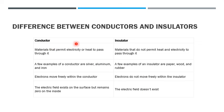Now we will discuss the difference between conductors and insulators. Conductors: materials that permit electricity or heat to pass through it. Insulator: materials that do not permit heat and electricity to pass through it.